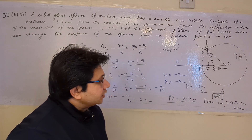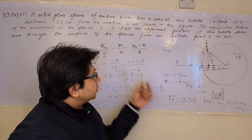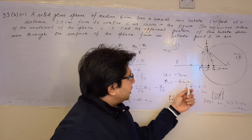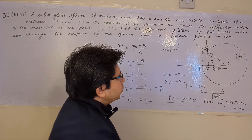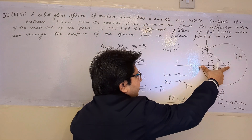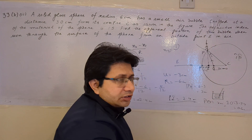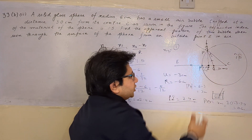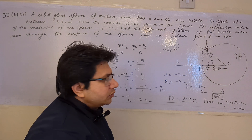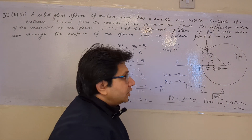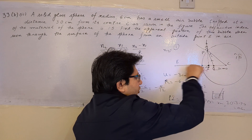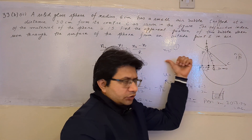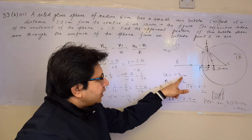Now we assign reference directions for U and R using sign convention. For U, it is the P-to-O distance; the bubble is 3 cm from center, so PO is 6 minus 3 equals 3 cm, and it gets a negative sign because it is in the rightward direction while the incident ray goes from right to left. So U is minus 3. For R, similarly, the radius of curvature is in the rightward direction, which is against the incident ray direction, so R is also negative.